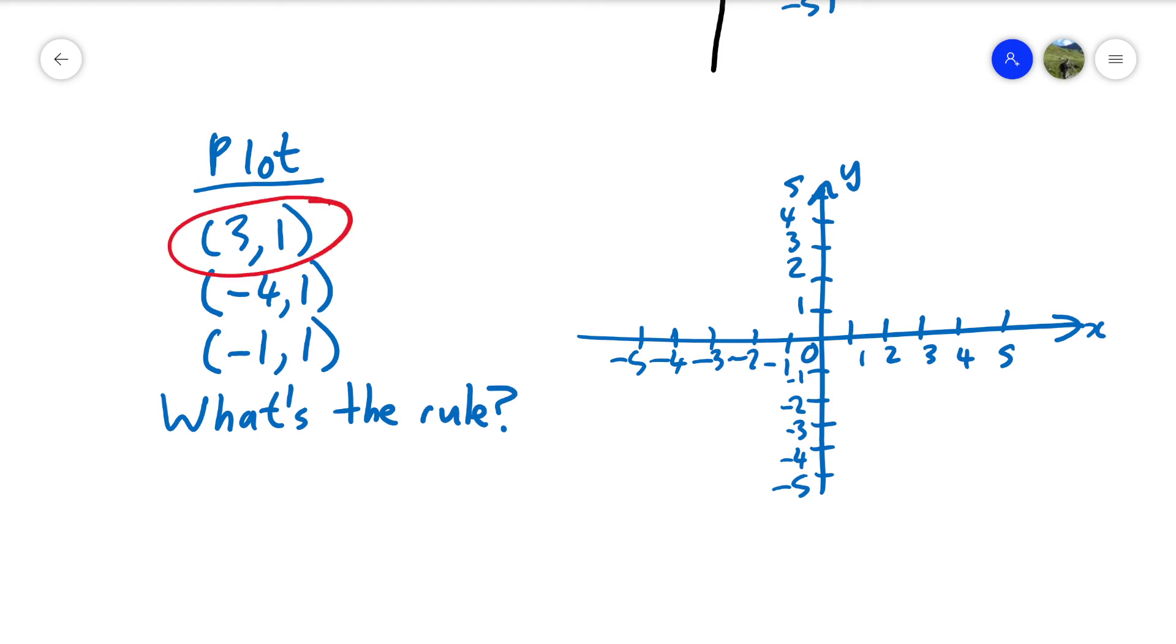Let's plot this first. X is three, y is one. X is minus four, y is one. We're seeing a pattern here. I think we are. X is minus one, y is one.